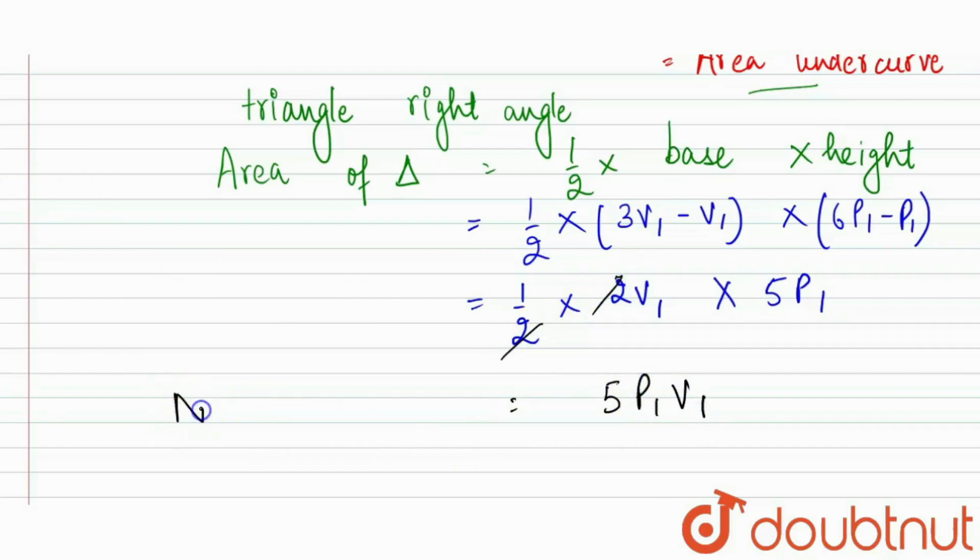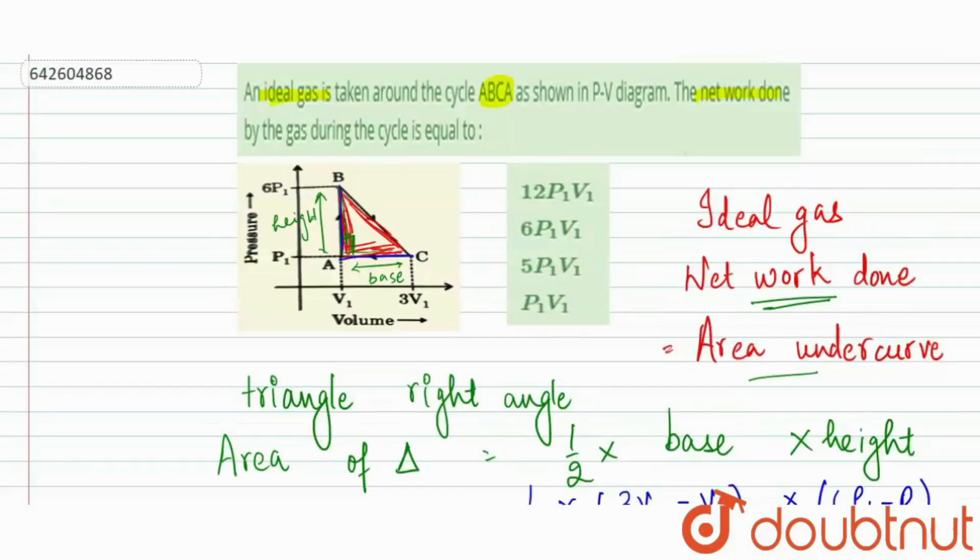So our work done, net work done is equal to the 5P1 V1 according to the given PV diagram. According to the given PV diagram, our work done is equal to the 5P1 V1. So in the options, it matches with the third option and that is our correct answer.